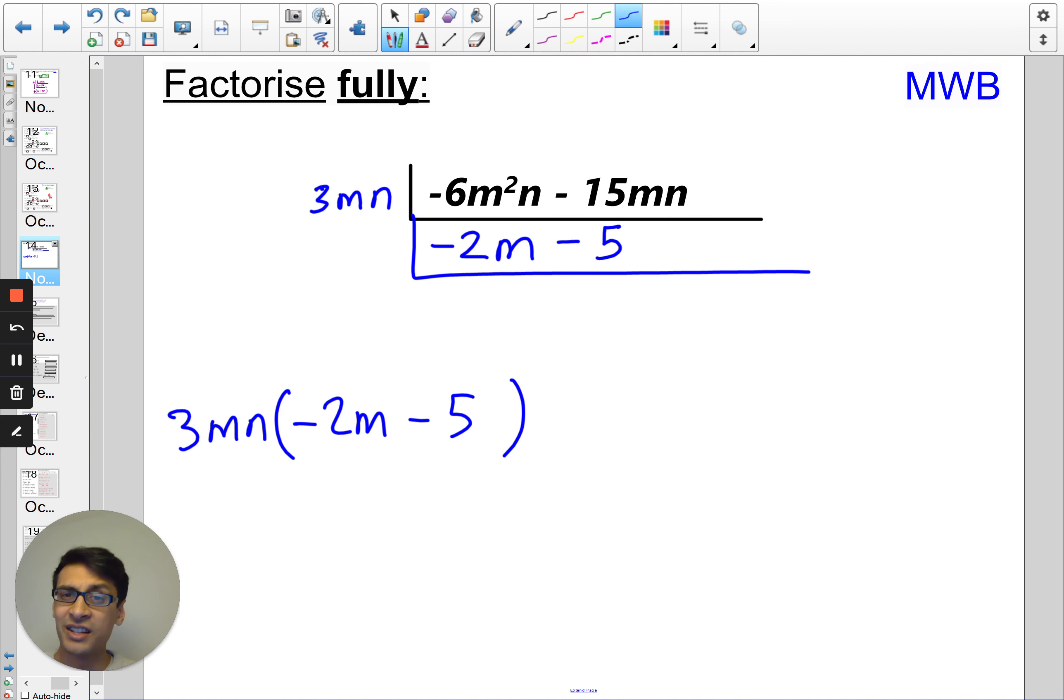I'm actually going to do this question again. It's going to be slightly different and we're going to spot what the difference is. So I can see that the numbers, when I look at the numbers, I've got negative 6 and negative 15. So the thing that goes into both of those, actually, is negative 3. So I could put negative 3mn.